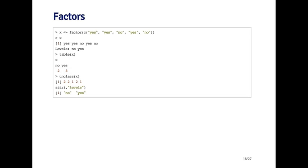X is a factor, and you can see it prints out a little bit differently from a character vector in the sense that it prints out the values yes, yes, no, yes, no, and then it has a separate attribute which is called the levels. The levels of this factor are no and yes. There's only two levels.